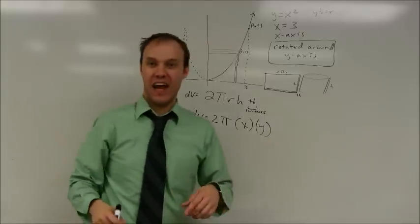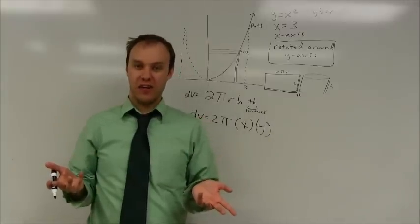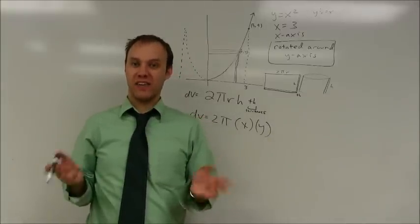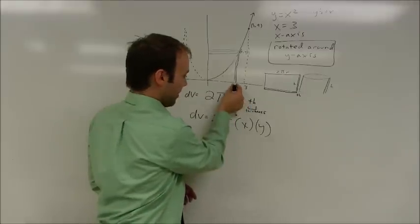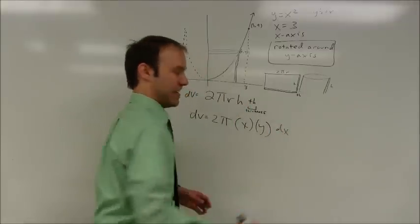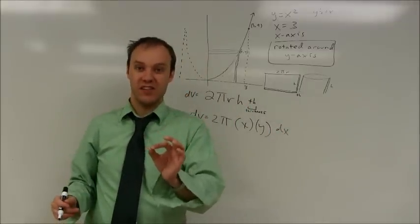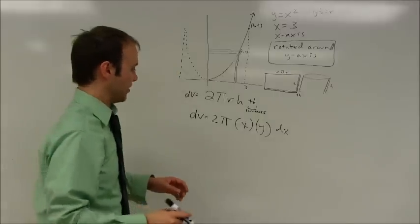The height is a y value. Very often in the shell method, you're going to have an x and a y value in your equation. So, it tends to work nicely when you can solve for one variable to the other. And then the thickness of that thing. Notice that's a width in the x direction. That's going to be a dx.